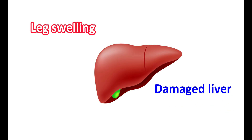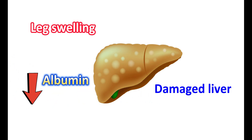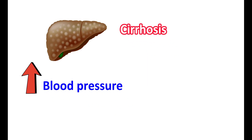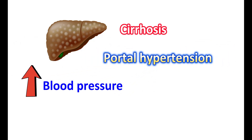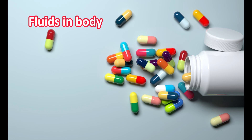Another reason for leg swelling is damaged liver. The liver is the important organ that produces albumin. In people with liver damage, albumin production is reduced, which results in decreased binding of lipid components in the blood, leading to increased fluid leakage into the tissues and edema. Cirrhosis of the liver can also increase the blood pressure in the portal circulation — a condition called portal hypertension — which can also contribute to peripheral edema and accumulation of fluids in the abdomen.